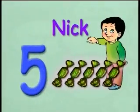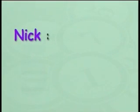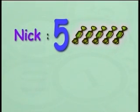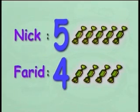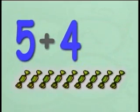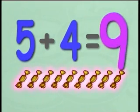Nick has five sweets. Farid has four sweets. Find the sum of the sweets they have. Nick has five sweets. Farid has four sweets. To find the sum, we add five to four and we get nine sweets.